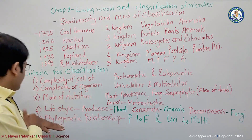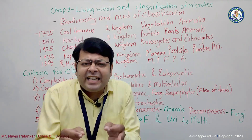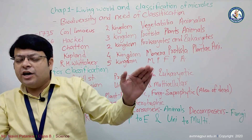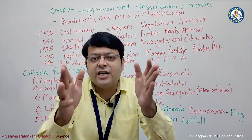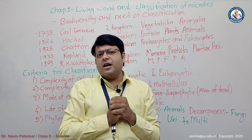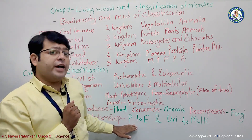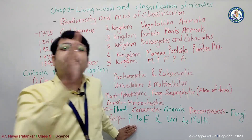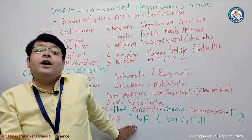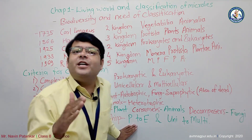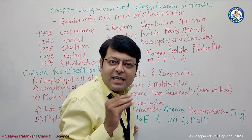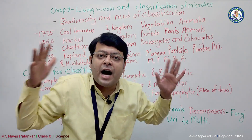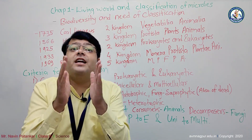The fifth criteria is the phylogenetic relationship — that means prokaryote to eukaryote, and unicellular to multicellular. This represents evolutionary progression from primitive nucleus to true nucleus, and from single-celled organisms to multiple-celled organisms. Based on these five criteria, the whole living system is divided into five kingdoms: Monera, Protista, Fungi, Plantae, and Animalia.